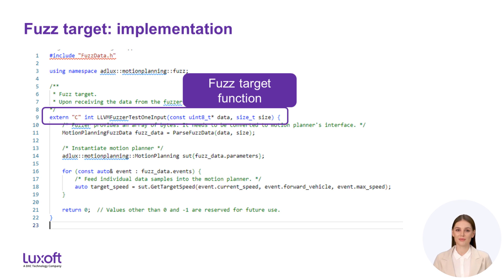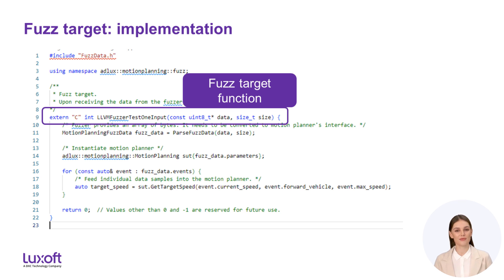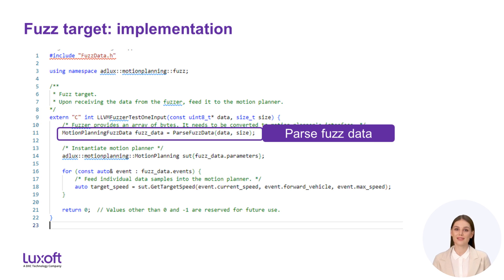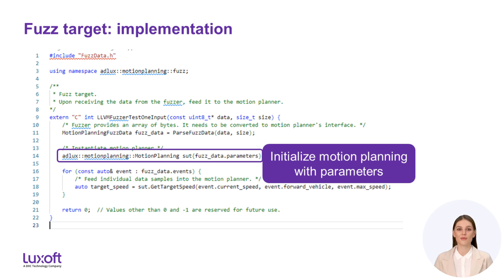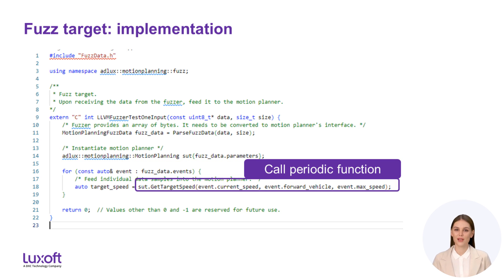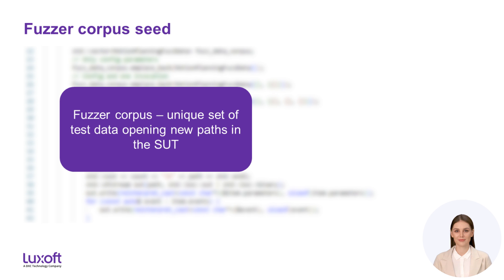In order to receive data from the fuzzer, we need to implement a function with a particular signature. The name llvmFuzzerTestOneInput is required by libFuzzer but is also supported by other fuzzing frameworks such as AFL and HongFuzz. We do not need to define a main function because it will be provided by libFuzzer. Having received an array of bytes from the fuzzer, we convert it into the structure, initialize the motion planning component using the configuration parameters, and then call the periodic function with its inputs from the struct — potentially multiple times.